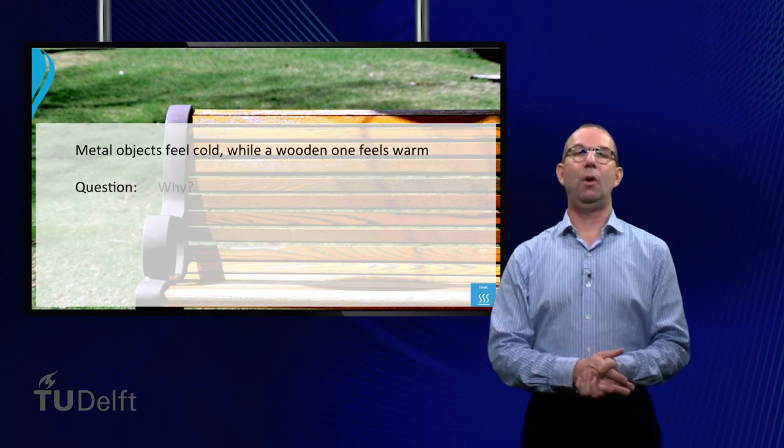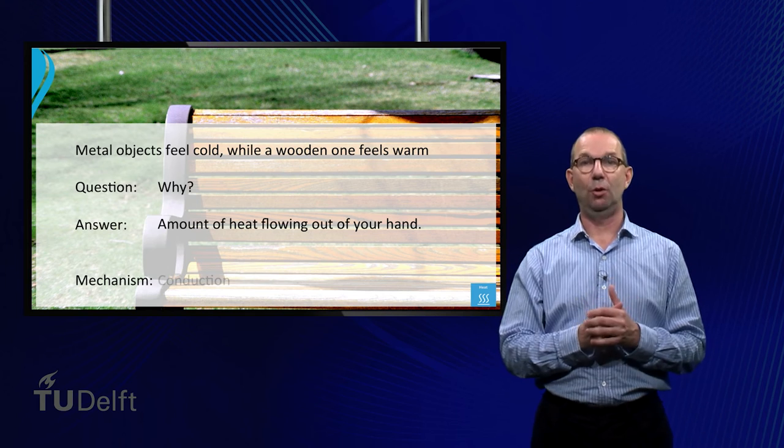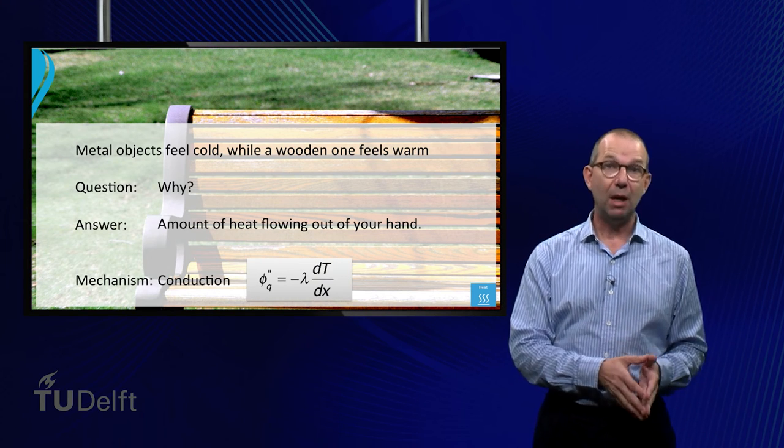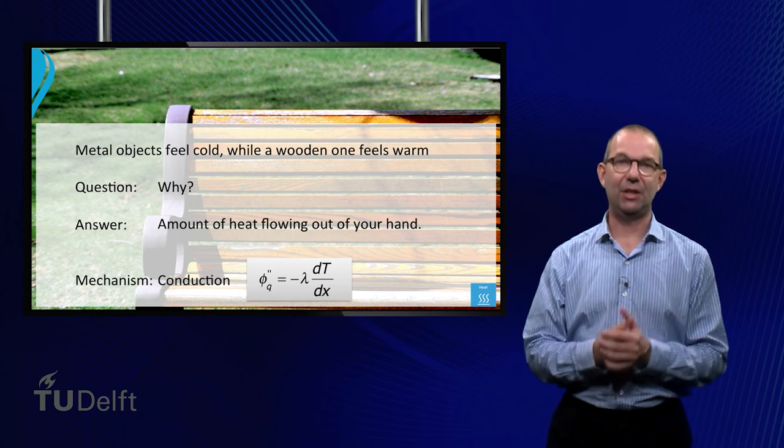Let's finally go back to our original question. Why does a metal object of room temperature feel cold and a wooden one warm? By now we can understand this.